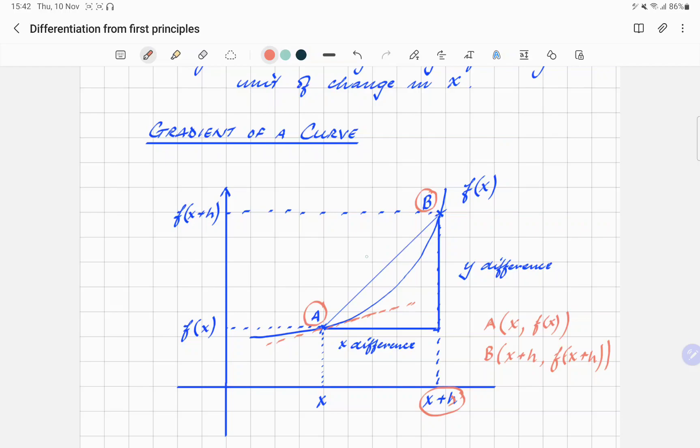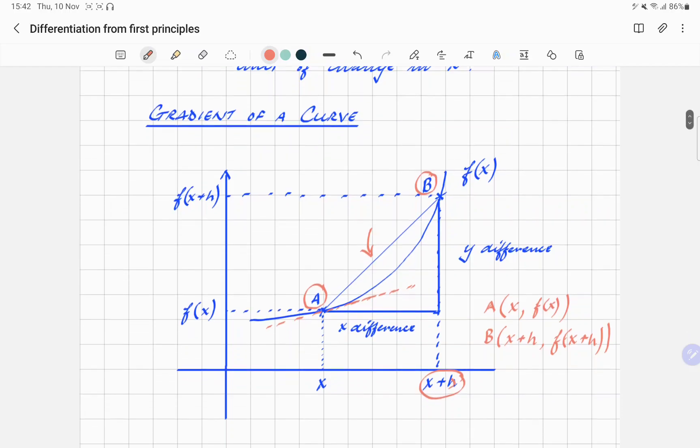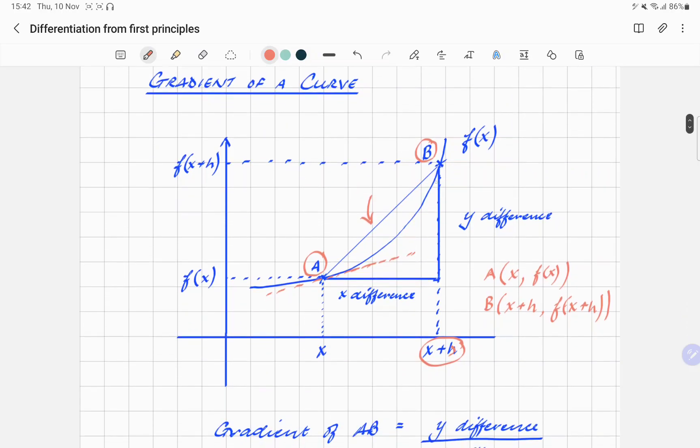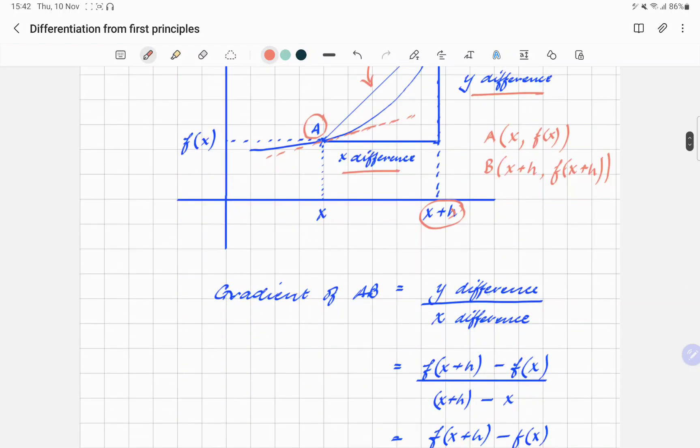And if we were to take a straight line like that from a to b, that would give us a gradient from a to b. Now realize that that is not quite the gradient we're after, but it will be revealed in just a moment. So if you want to work out the gradient from a to b, obviously going back to your GCSE, you're going to take the y difference divided by the x difference. That gives you the gradient from a to b.